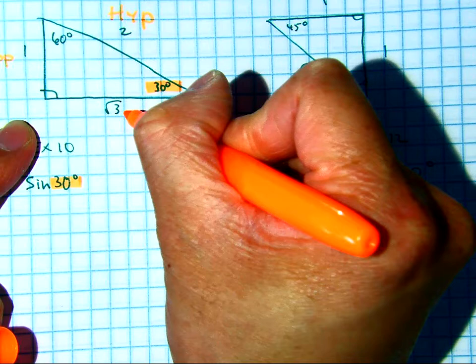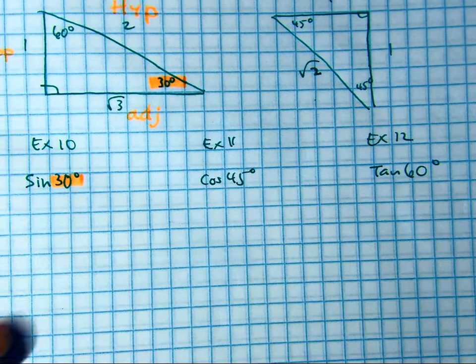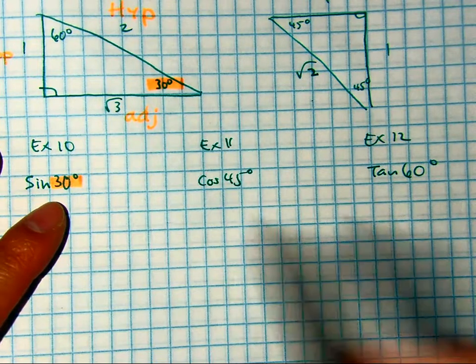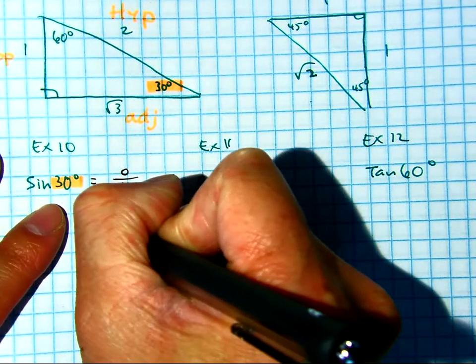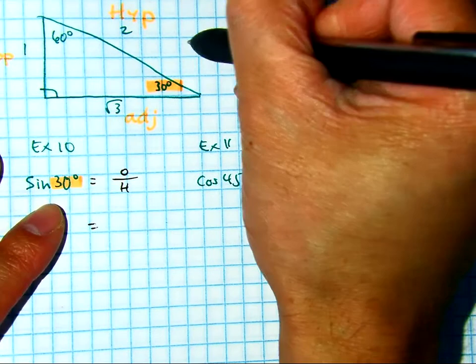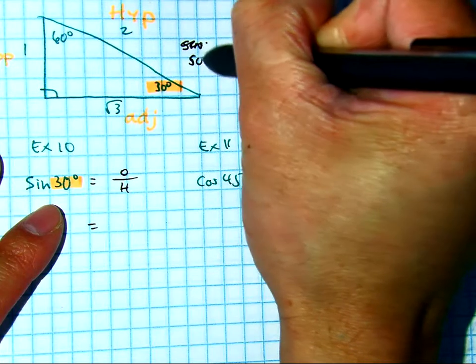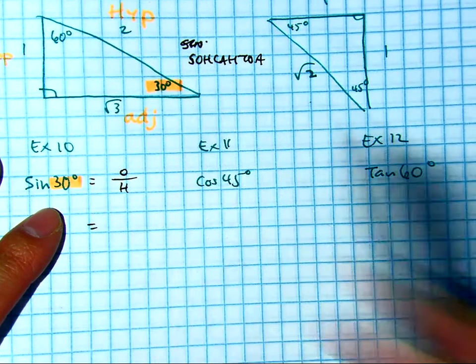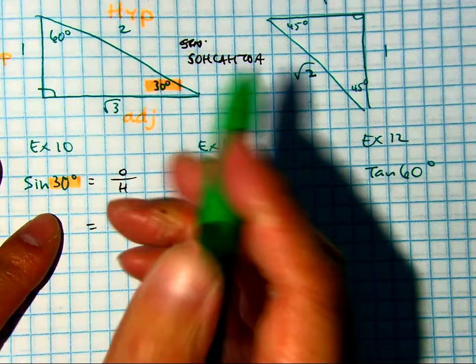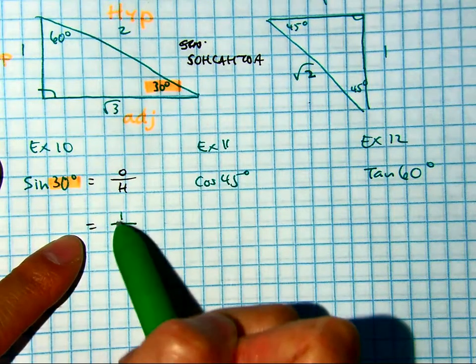Class, sine is which two sides? Opposite over the hypotenuse. Remember, if you forget, you can use the silly phrase SOHCAHTOA. Opposite over the hypotenuse. So the opposite is one. The hypotenuse H is two. So sine of 30 degrees is equal to one half.